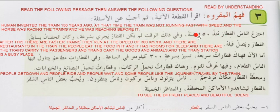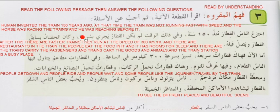Iqtara al-naas al-qitaar munzor maya khamsin sana. Wa fi zhalik waqt lam yakun al-qitaar yajri bi surah wa kana al-hassan yasabiq al-qitaar wa yasul qabluhu. Human invented the train 150 years ago. Iqtara means invented. Muzh means ago. At that time — fi zhalik waqt — the train was not running fast, lam yakun qitaar yajri bi surah. And the horse — wa kana al-hassan — was racing the train and reaching before it — yasabuq al-qitaar wa yasul qabluhu.